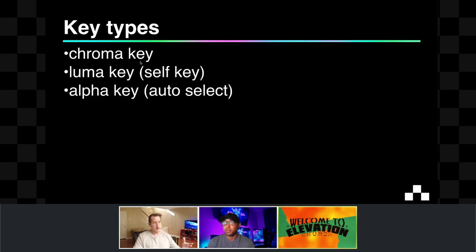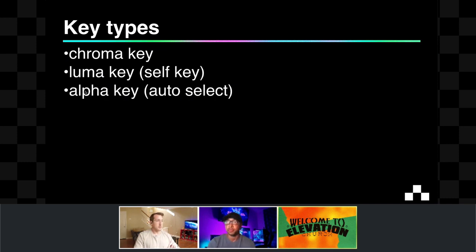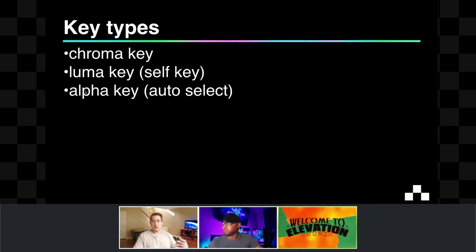So far we've talked about chroma key, luma key, and alpha key — just a brief overview of the three types of keyers. What we're going to do now is pull up Ross Dashboard with a feed from Matthews campus, pull up the multi-viewer, and talk about each type of keyer in more detail to show how they work.